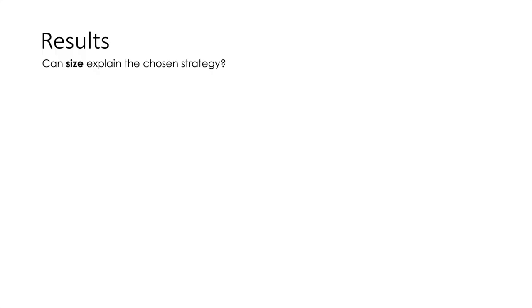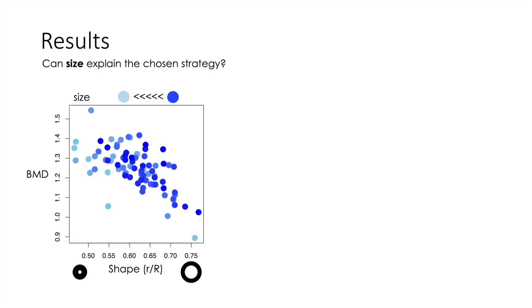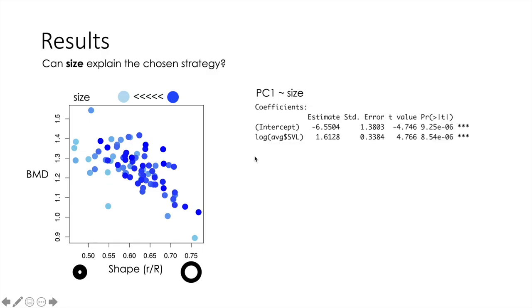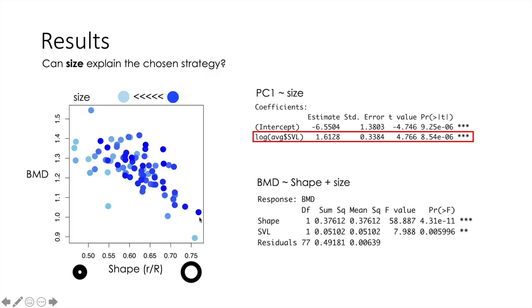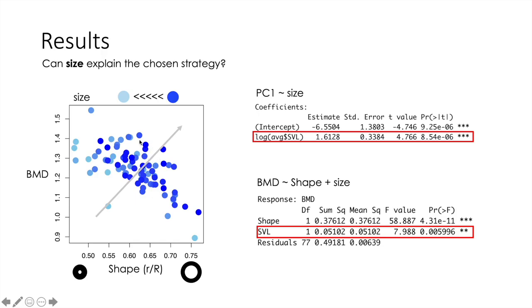Another thing I asked was whether size could explain the chosen strategy. When we color species based on their size — darker colors for larger sizes — at first sight smaller species tend to group in one region of the relationship. Testing for the relationship between PC1 scores and size, I found a significant positive relationship, meaning larger species tend toward one region and smaller species toward another. I also found a significant positive relationship between size and the residual variation of this relationship, with larger sizes toward the same region as higher stiffness.